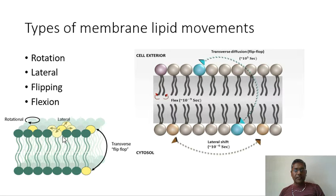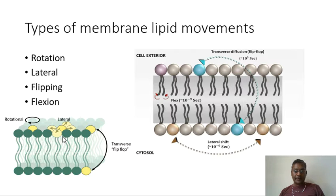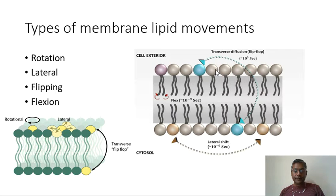Finally, it is possible for phospholipids to move between both leaflets of the bilayer in transverse movement in a flip-flop manner — from the lower leaflet to the upper leaflet, shifting from one layer to another. This lateral movement is what provides the membrane with a fluid structure.